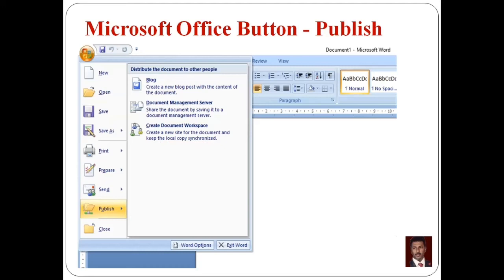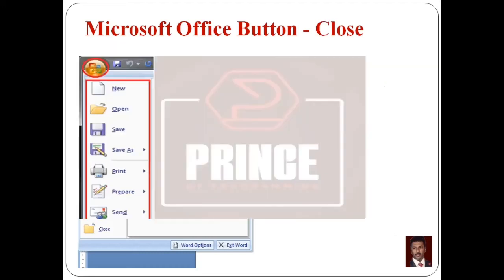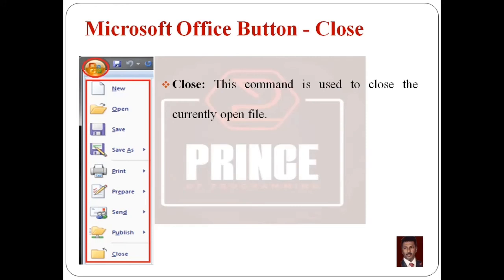You can also use the Publish option from the Office Button fly-out menu to distribute the document. For example, you can create a blog post with the content of the document. The Close command is used to close the currently open file. The shortcut key is Ctrl+W to automatically close the file.